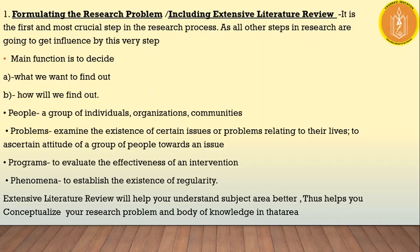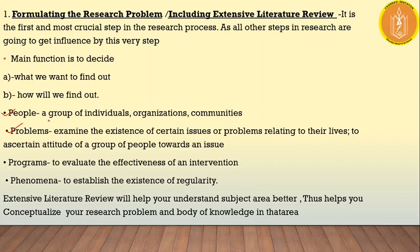To specify our research problem we look at four things: people, problems, programs, and phenomenon. You have to consider what people — the organizations and communities — are going to be included in your research. Examine existing problems or issues that are already prevailing. Look at programs and phenomena based on day-to-day occurrences or the kind of research you are going to pursue. This is the foundational first step on the basis of which you move forward in your research.